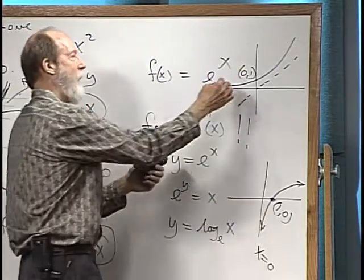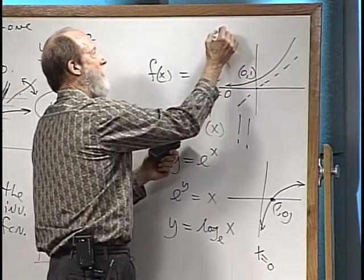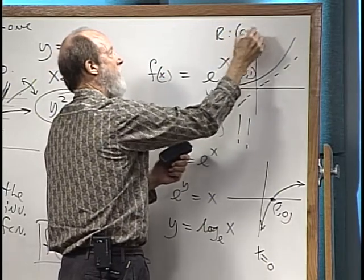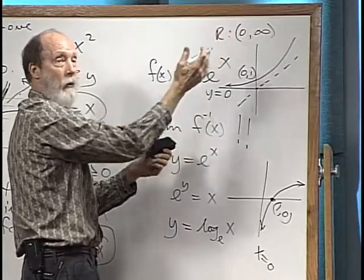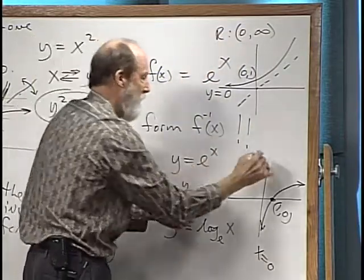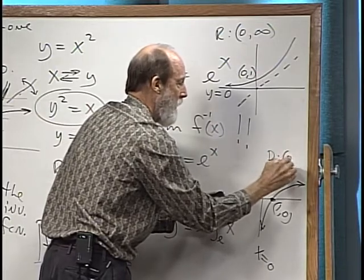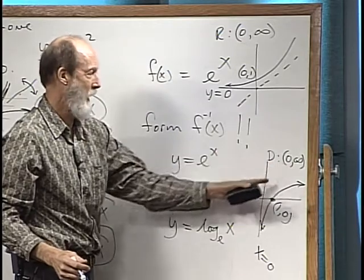And notice what the range is on this exponential. The range is greater than zero, isn't it? Greater than zero, and so therefore that becomes the domain down here, greater than zero. We'll never hit the y-axis.